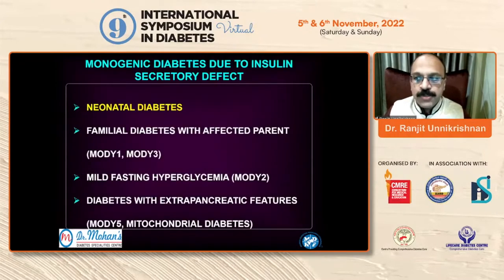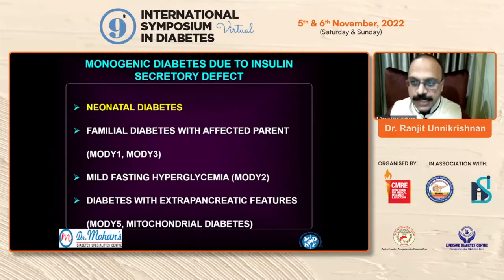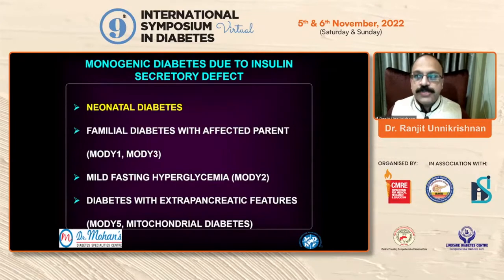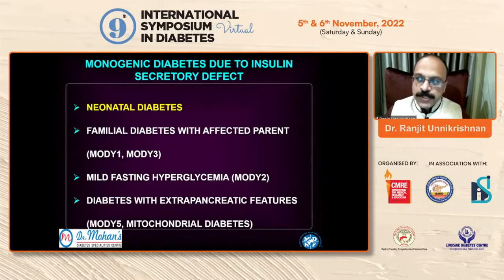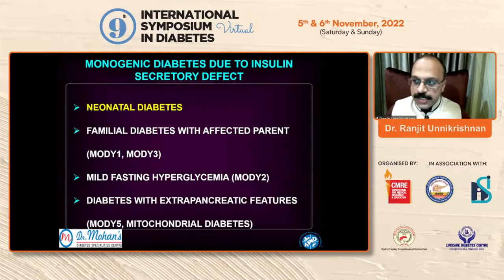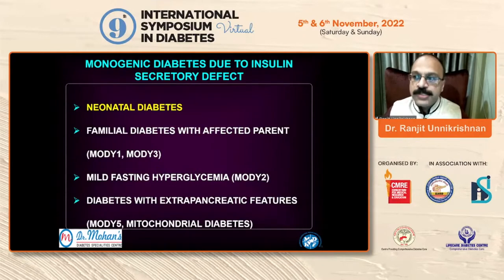Monogenic diabetes due to beta cell defect usually presents as one of four phenotypes. This is important for selecting individuals for genetic testing — you can't test everyone with young-onset diabetes, but certain phenotypes raise the possibility. The first is neonatal diabetes; the second is familial diabetes with an affected parent, formerly called MODY 1 and MODY 3; the third is mild non-progressive fasting hyperglycemia, formerly called MODY 2; and the fourth is syndromes associated with insulin secretory defect and extra-pancreatic stigmata.